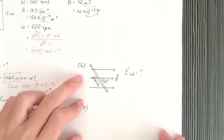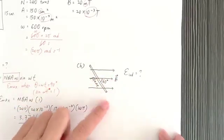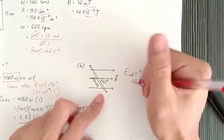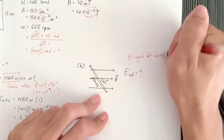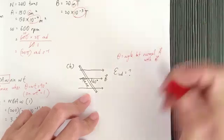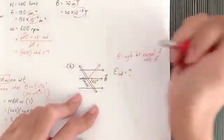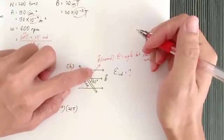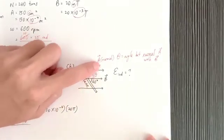Next is part B. He asked for EMF induced when the plane of coil is 60 degree with the magnetic field. So what is the angle theta? Is the angle theta 60 degree? No. Theta is the angle between the normal area with magnetic field. Not the plane. Not the plane. It's the normal. You must look for the normal. So we must draw the normal of the area, the normal to the plane. The angle between the normal and the magnetic field is angle theta, not the 60 degree. We must look for the normal with the magnetic field.